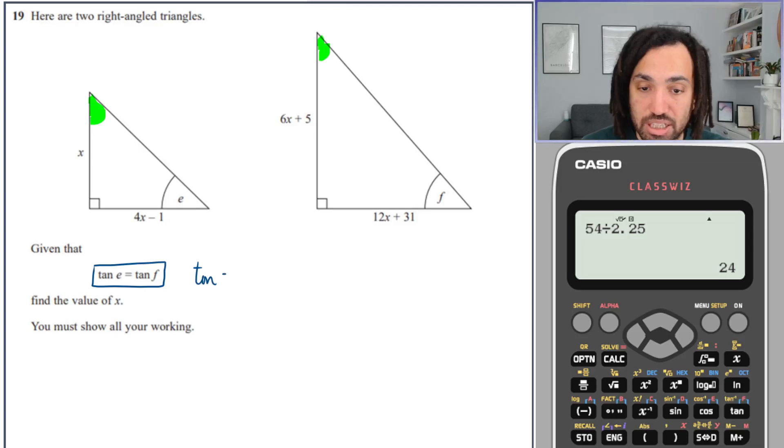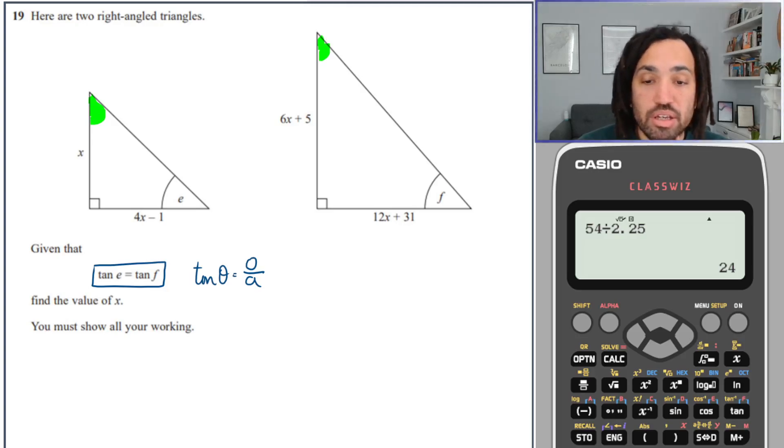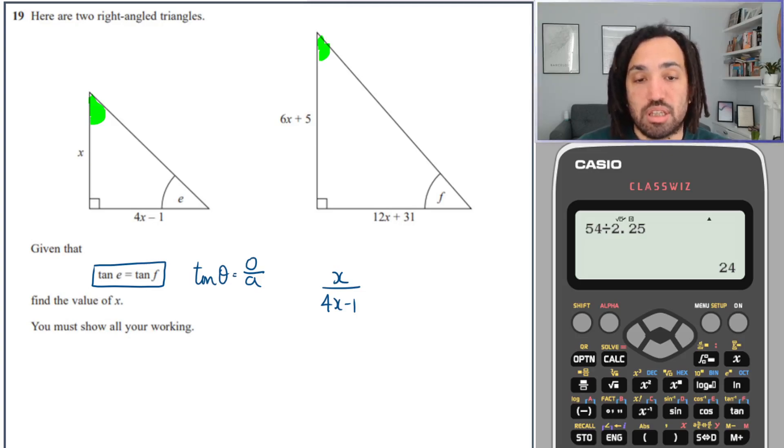I'm going to use the fact that tan E is the same as tan F. So what is tan? Well tan as we know is always equal to, or tan of an angle is always equal to, the opposite over the adjacent. So let's look at the triangle on the left. We know the opposite is x and the adjacent is 4x minus 1.